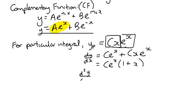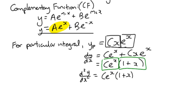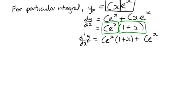For the second derivative we apply the product rule again to Ce^x(1 + x), with Ce^x as the first term and (1 + x) as the second. Differentiating gives Ce^x times (1 + x) plus Ce^x times 1. Taking out the common factor Ce^x gives us Ce^x(2 + x) as the second derivative.